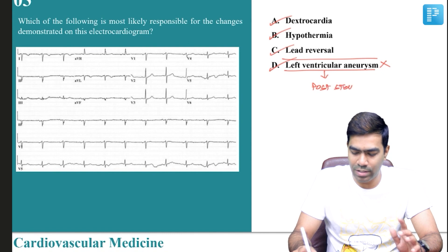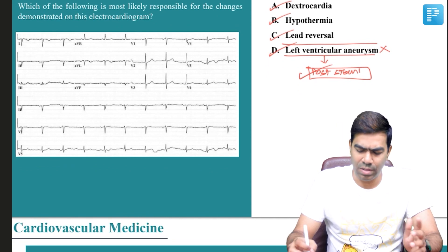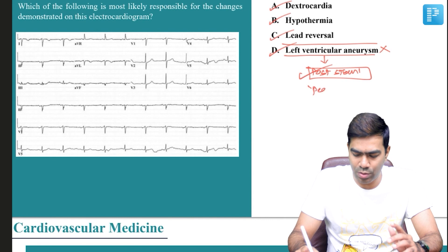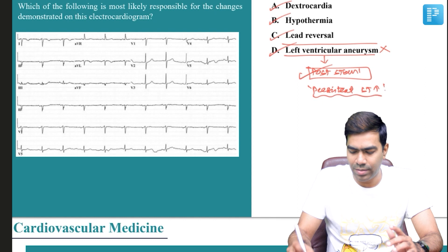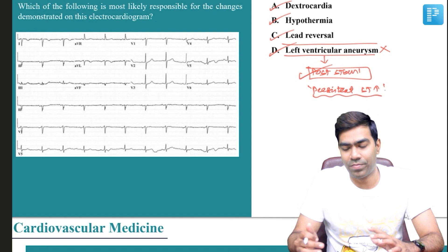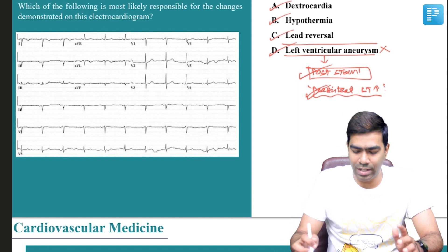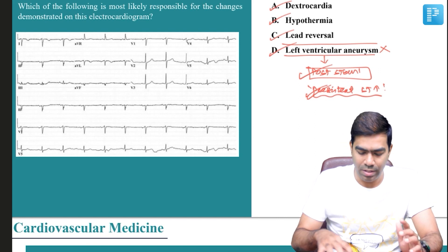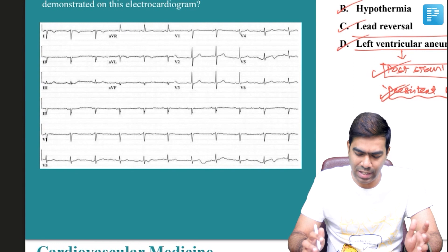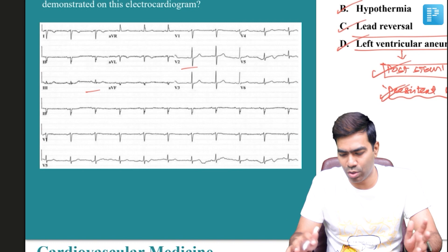Left ventricular aneurysm is unlikely because it happens as a complication of STEMI, so you'll have a history of STEMI in most patients with LV aneurysm. The EKG clue is persistent ST segment elevations even after appropriate treatment of STEMI — if there are persistent ST elevations for days together, you can think about LV aneurysm. I don't see any ST segment elevations in this EKG, so we rule out left ventricular aneurysm.